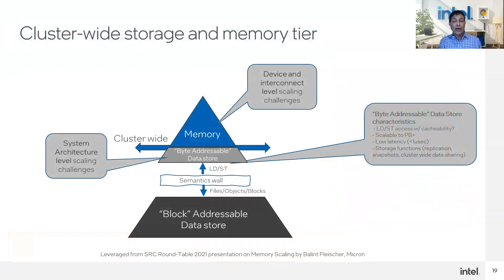This slide offers a view of how to treat SCM — storage class memory — as a byte-addressable data store with storage-style data management and protection services, while being accessible through load-store semantics of CXL and deployed cluster-wide. You get load-store access with cacheability, scalability to petabytes-plus, low-latency access of less than a microsecond with CXL-style accesses, and storage functions such as replication, snapshot, and cluster-wide data sharing.